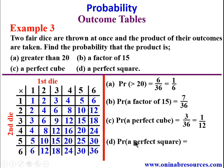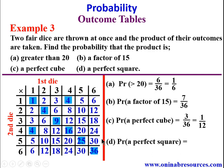For D, the probability of getting a product that is a perfect square. The perfect squares are 1, 4, 9, 16, 25, 36. Going row by row: 1, 4, 4, 9, 4, 16, 25, 36 — that gives 8 perfect square entries. The probability is 8/36 = 2/9 in simplest form as the probability of getting the product of the outcomes to be a perfect square.